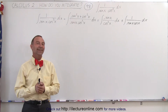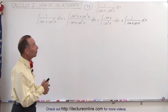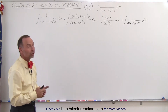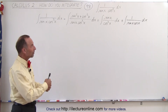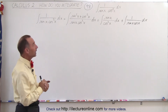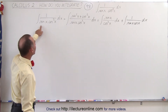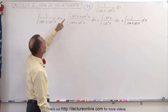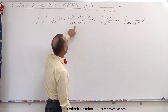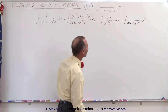Welcome to our lecture online. Our next example is the integral of 1 over sine of x times cosine cubed of x. Since we have 1 in the numerator and sine and cosine in the denominator, we're going to use the same trick again by replacing the 1 by the sum of sine squared plus cosine squared, and therefore we end up with two separate integrals.